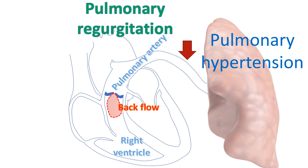The pulmonary valve is the least commonly involved valve in the rheumatic process, but it can become regurgitant like the tricuspid valve even without direct damage from rheumatic fever. As in the case of the tricuspid valve, when there is severe pulmonary hypertension secondary to mitral stenosis, the pulmonary valve is unable to hold on and becomes regurgitant. Very rarely, the pulmonary valve can also be stenosed in rheumatic heart disease.